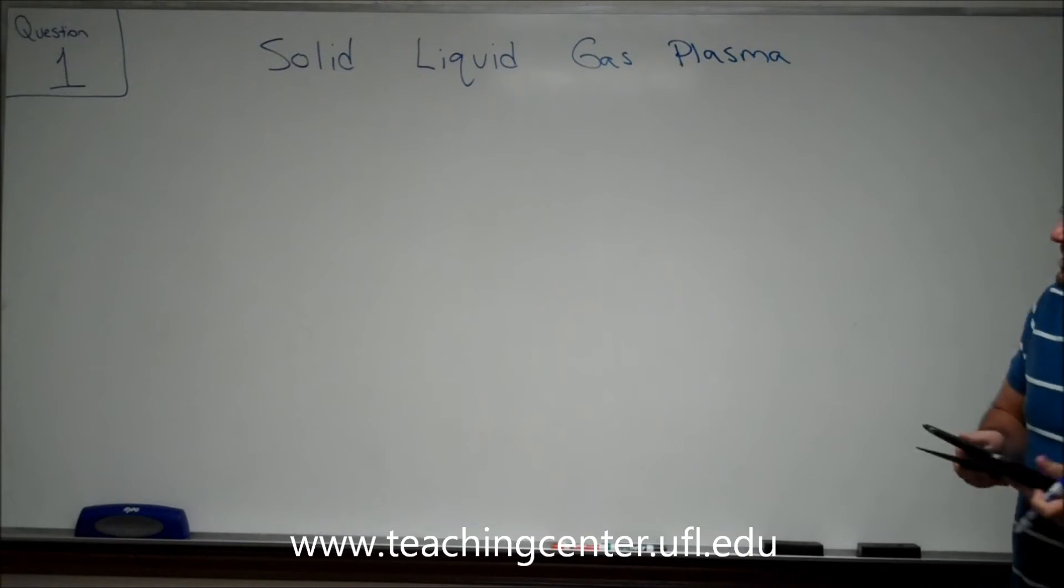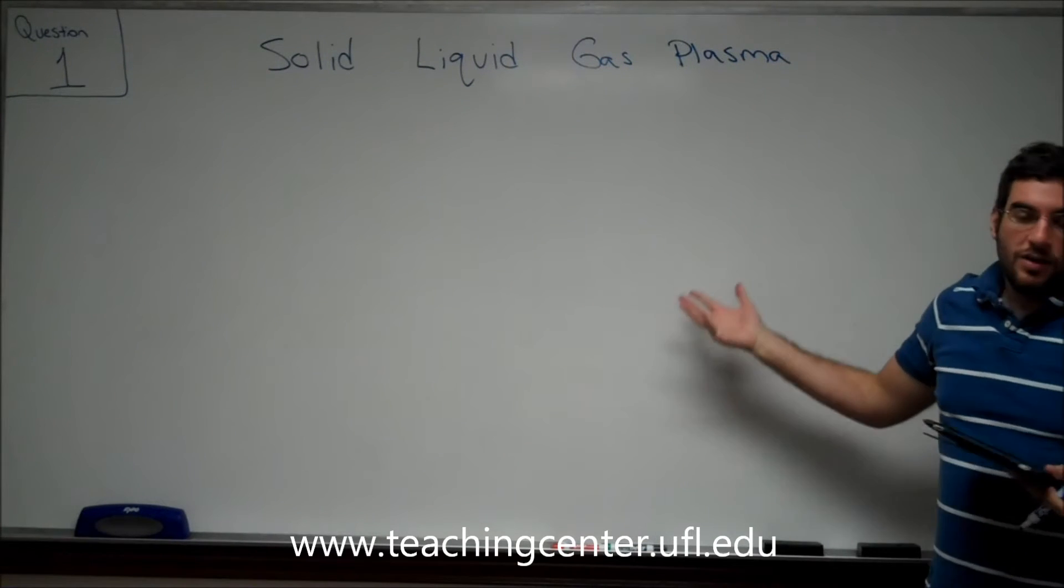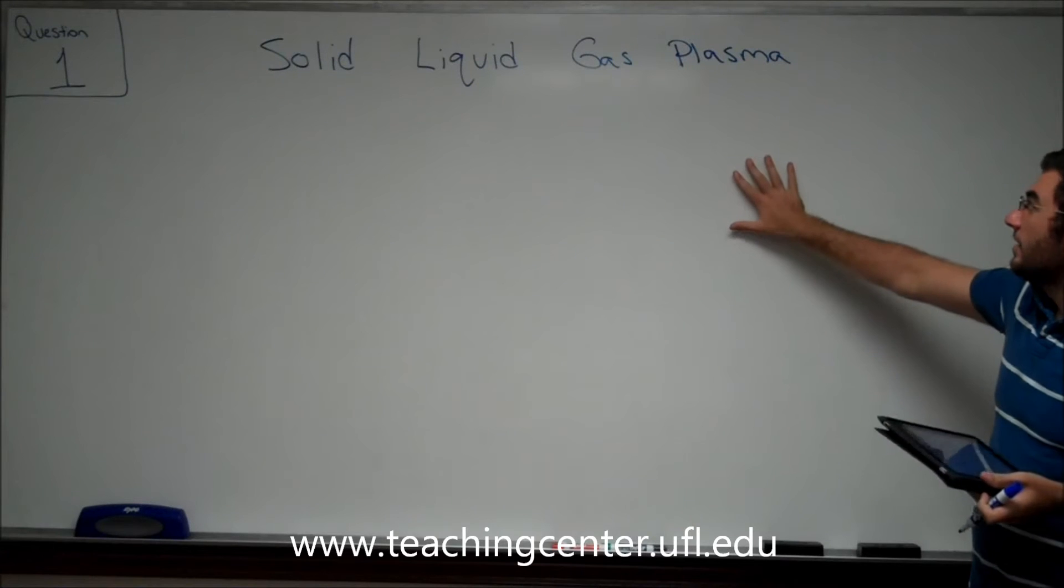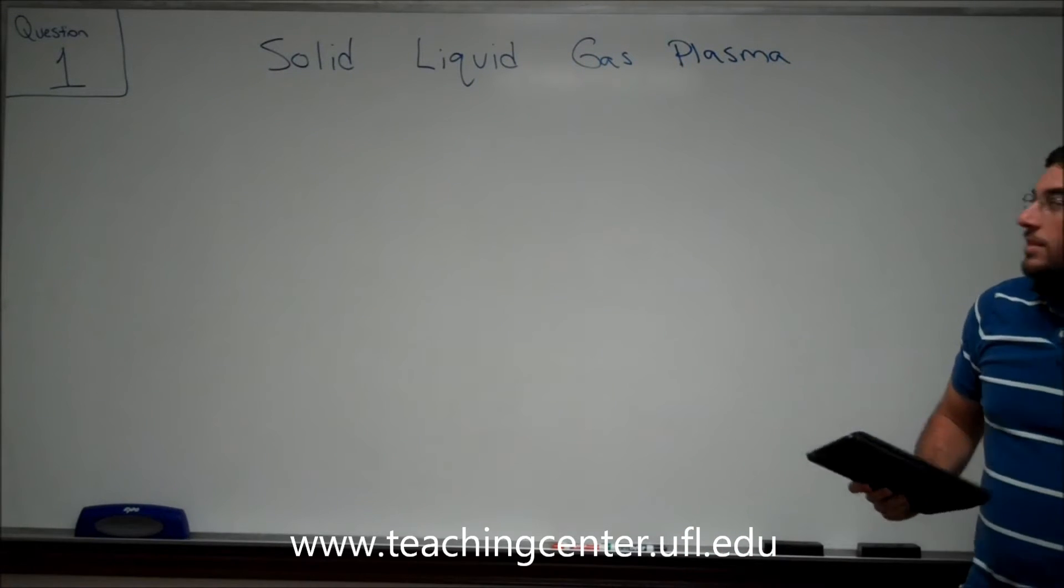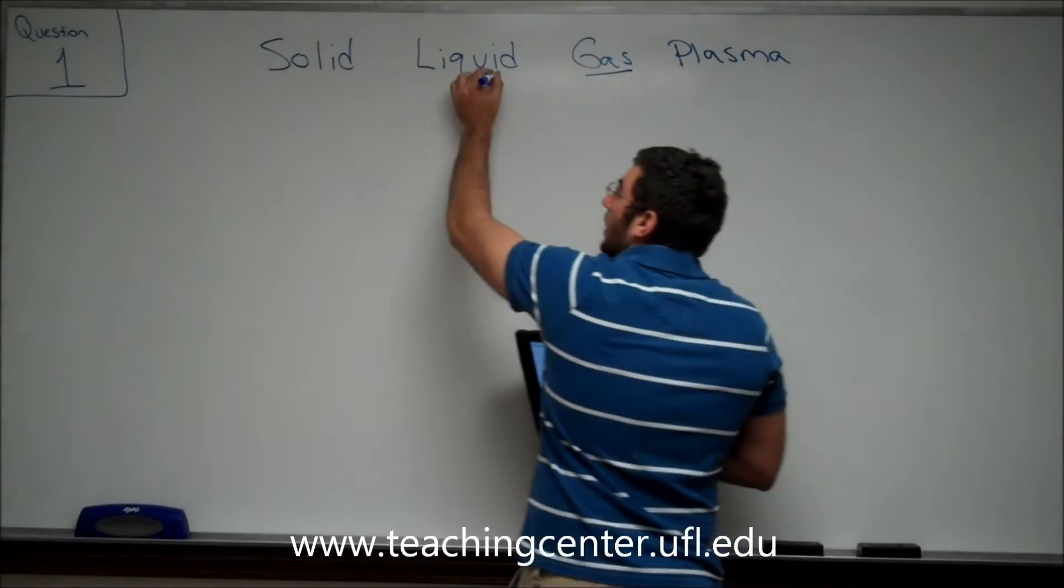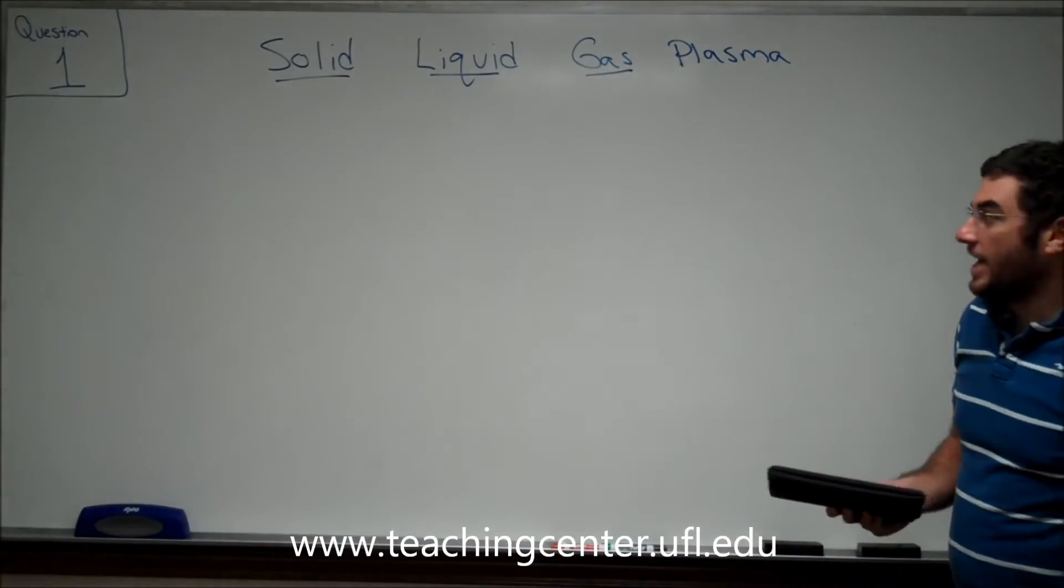Now, each one of these has a definitive property. Plasma is found on the sun. That's the kind of matter that the sun encompasses in its plasma. The main three that I like to consider here are the differences between a solid, a liquid, and a gas.